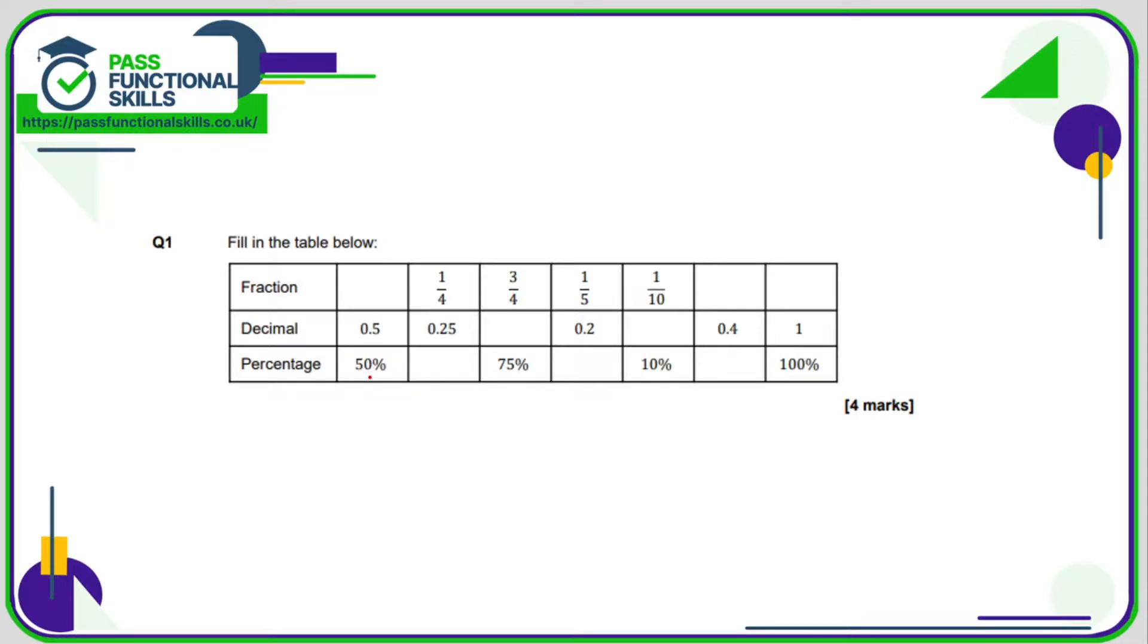Remember to go from a decimal to a percentage you multiply by 100. To go from a percentage to a decimal you divide by 100. So 0.25, that's the decimal. To turn it into the percentage, multiply by 100.